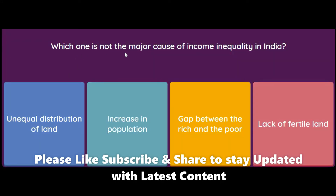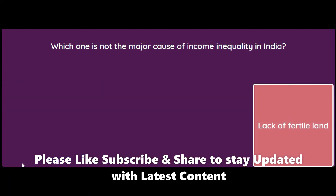Which one is NOT a major cause of income inequality in India? Unequal distribution of land, increase in population, gap between the rich and the poor, or lack of fertile land? The answer is: lack of fertile land.